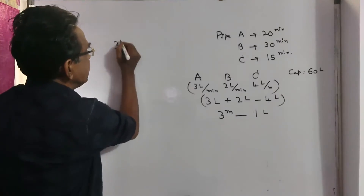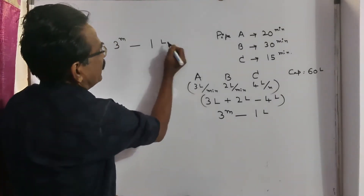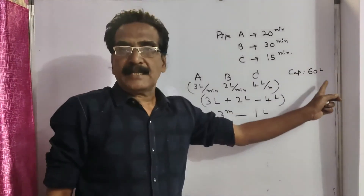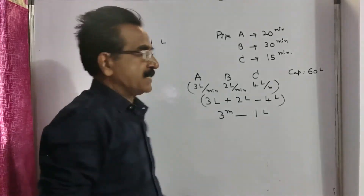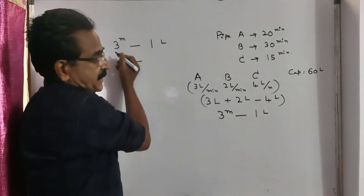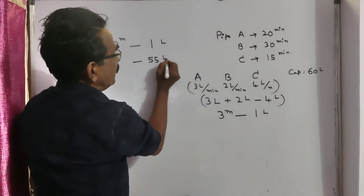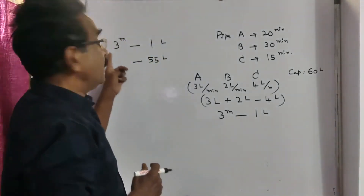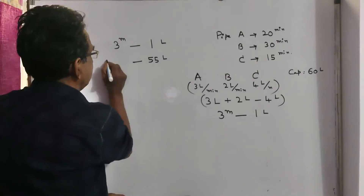So, in 3 minutes, 1 liter of water is filled. Let us see: for 55 liters, 55 into 3 equals 165 minutes — so 55 liters of water is filled in 165 minutes.